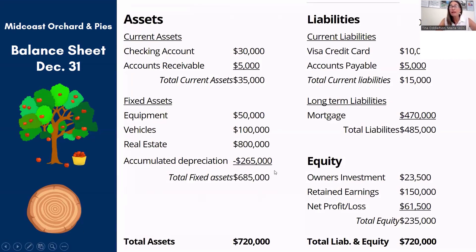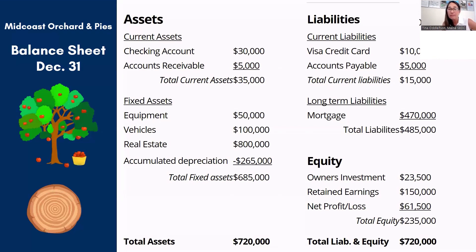Another thing I look at when reviewing a balance sheet is the fixed assets section and the accumulated depreciation line. I ask myself: have these assets been fully depreciated? If they have, that's a red flag — it tells me nobody's reinvesting in new assets. The truck wears out but it's still getting used; the equipment wears out but it's still getting used. That's a red flag that the business is not creating enough profit to pay for new assets, and it's making the trunk of the tree weaker.